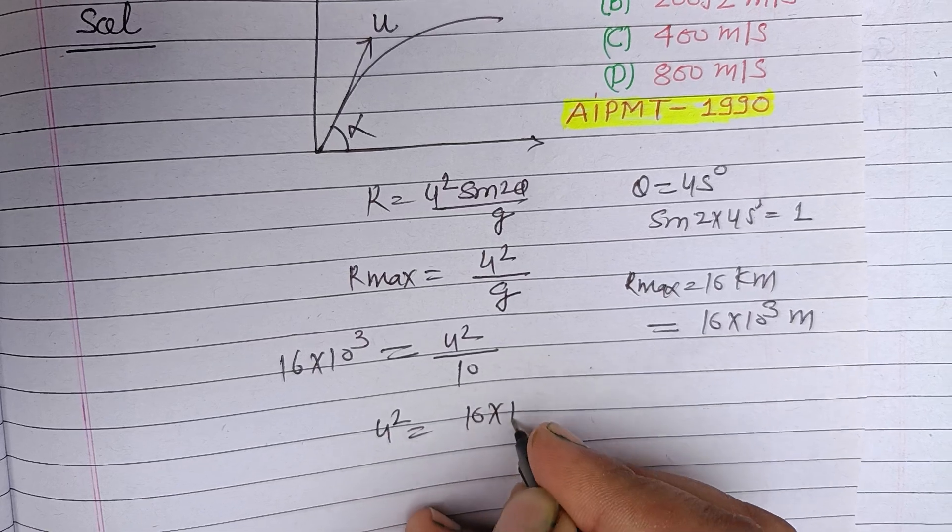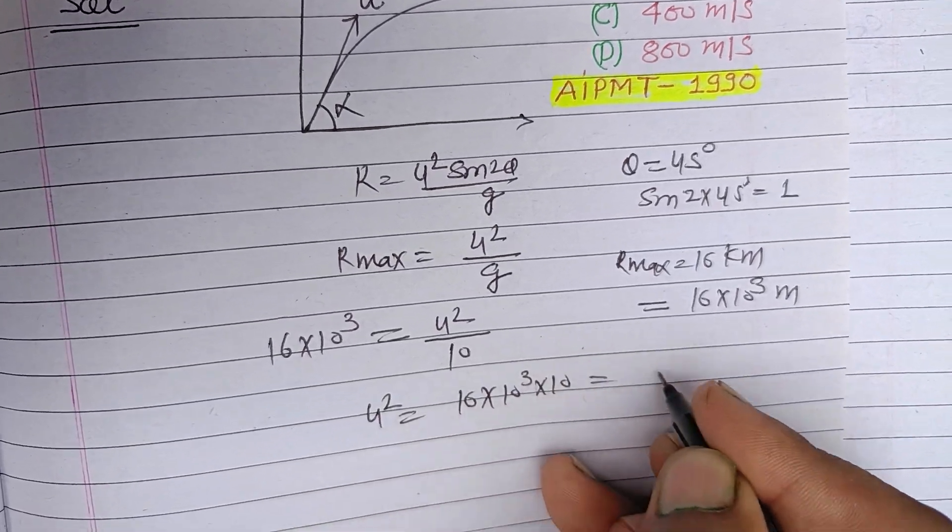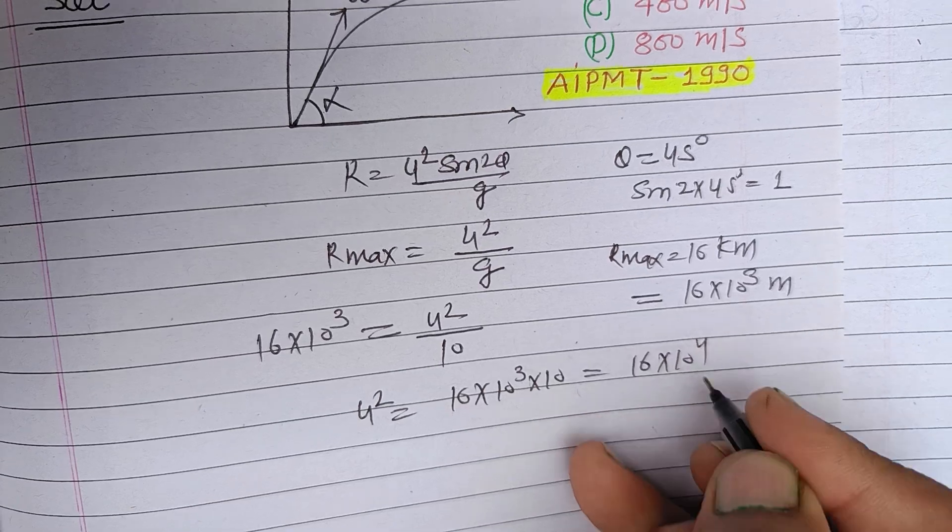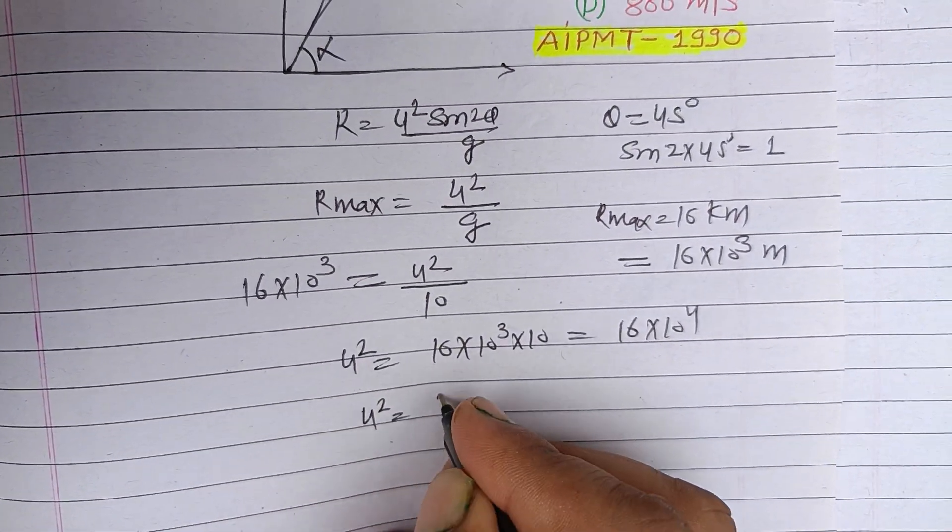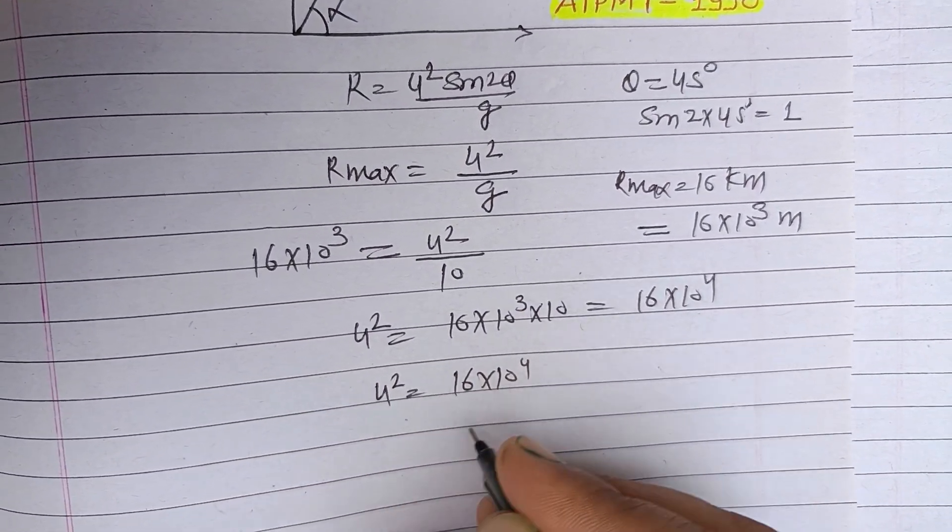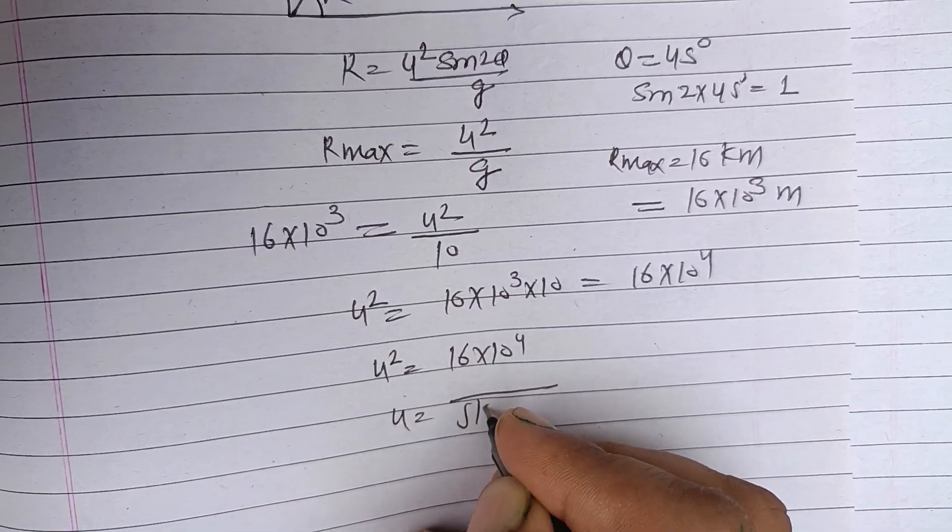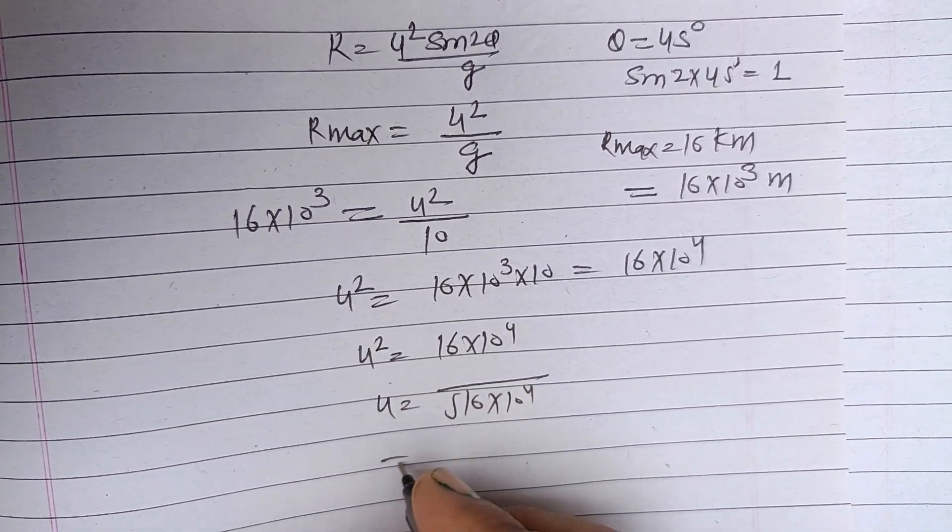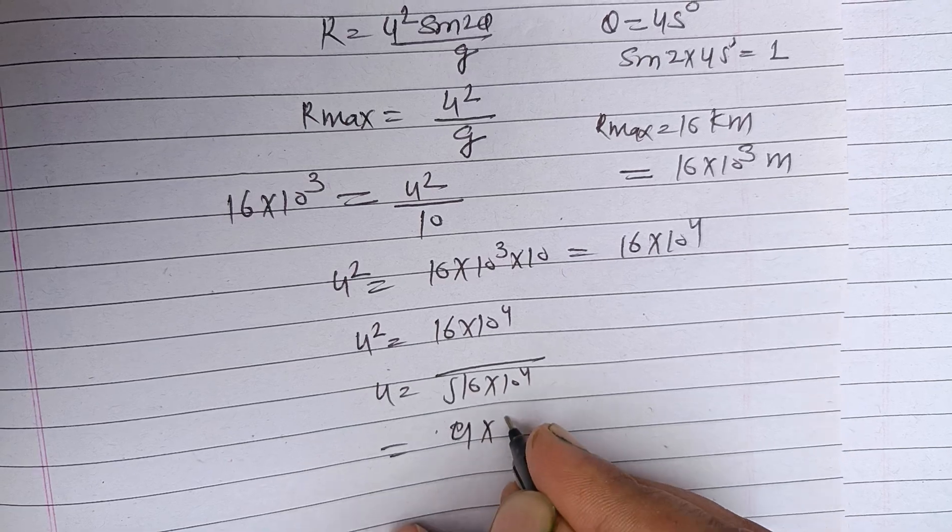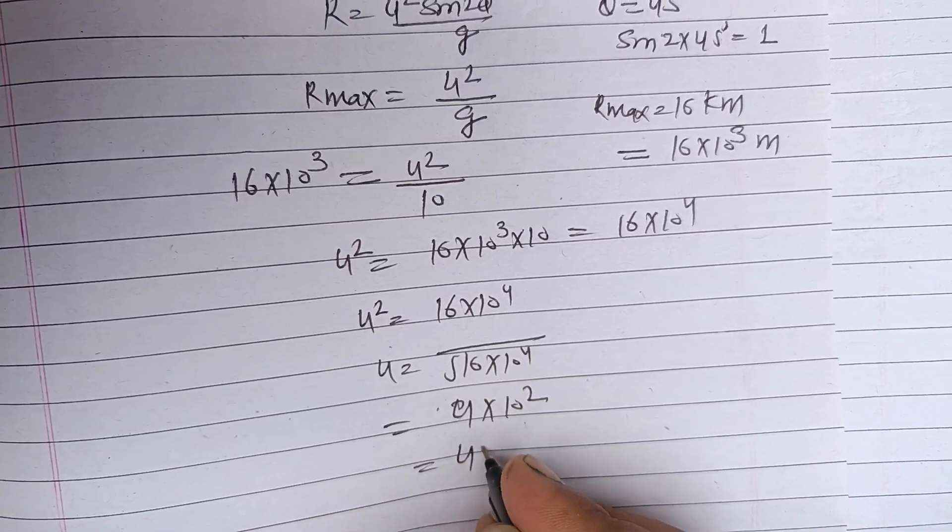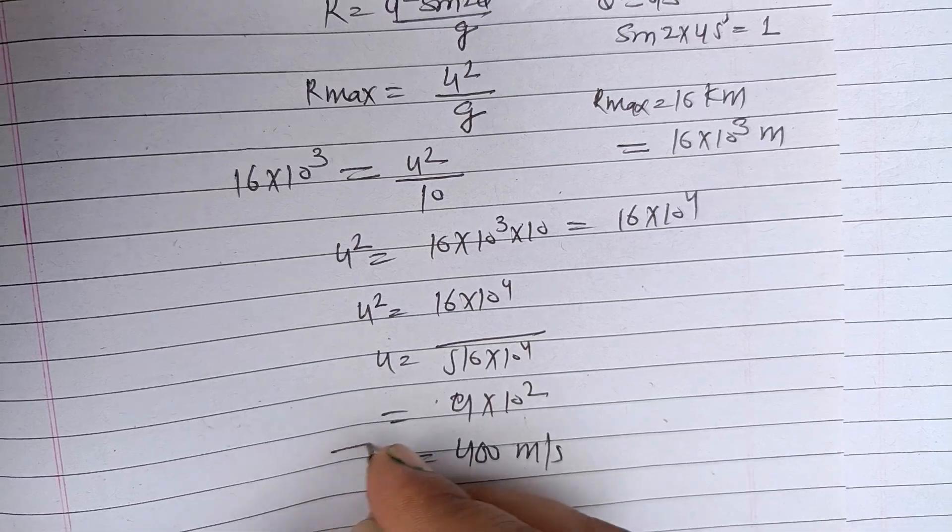So u squared equals 16 times 10 to the power 3 times 10, that is 16 times 10 to the power 4. Or u equals the square root of 16 times 10 to the power 4, that is 4 times 10 to the power 2, or 400 meters per second.